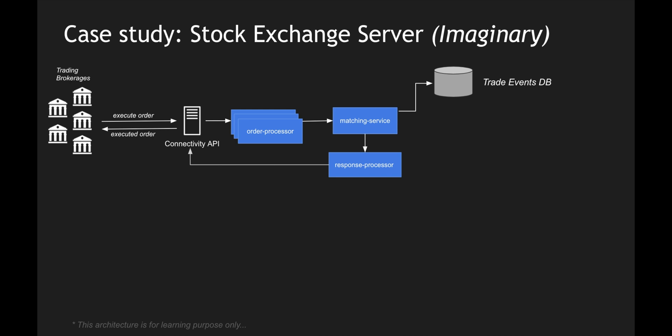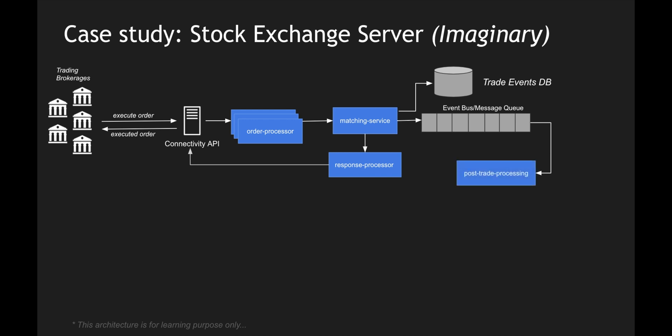This is like our data store where we have stored a copy of our event — it could be a buy or a sell, both of them will be placed in the trade events database. In order to use this trading information for other purposes, the matching service also publishes the message into a messaging queue or an event bus — imagine it like Kafka. The exchange publishes the matched trades for processing by post-trade processing services.